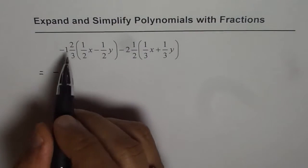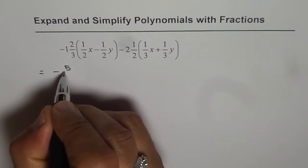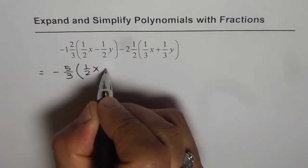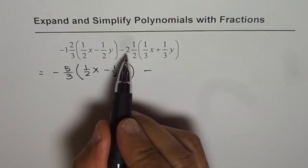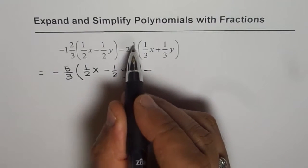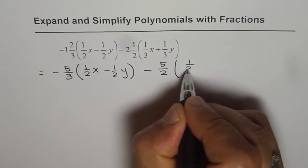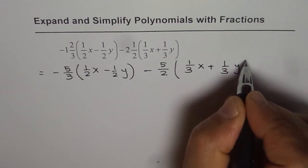So we have minus 1 times 3 is 3, 3 plus 2 is 5, minus 5/3 times (1/2x minus 1/2y) minus 2 1/2 is 5/2. 2 times 2 is 4, 4 plus 1 is 5. So we get 5/2 times (1/3x plus 1/3y).